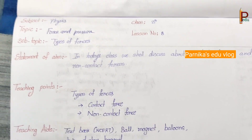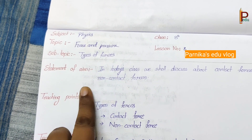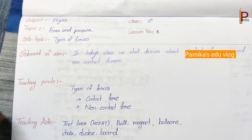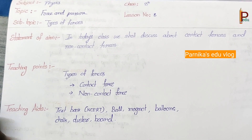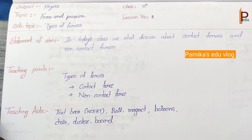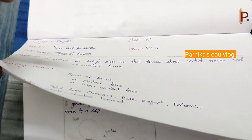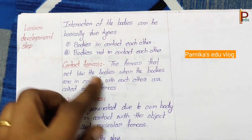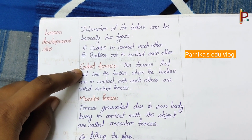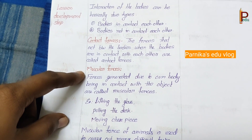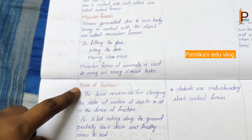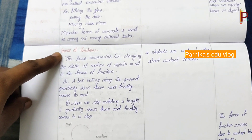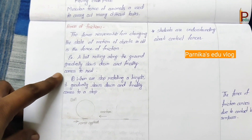Coming to the types of forces — statement of aim, teaching points, and teaching aids. Lesson development step — first one is contact force. In this we have: first one is muscular force with a few examples, and force of friction with its definition and a few day-to-day examples. Along with the diagram we can explain.